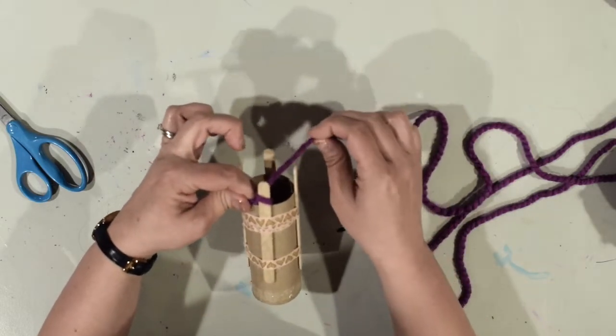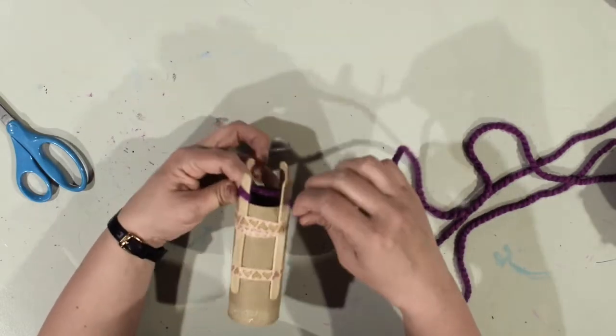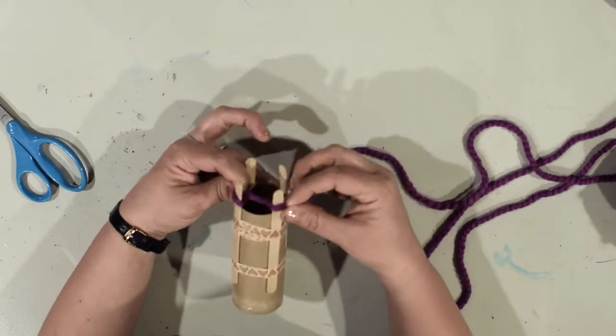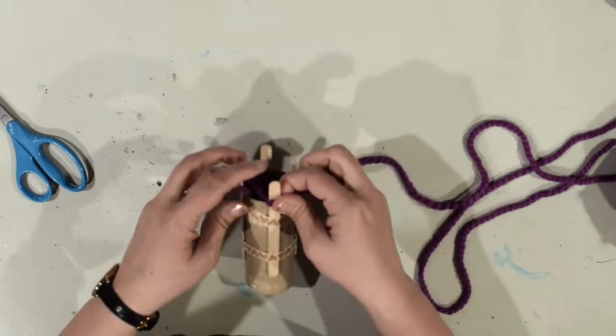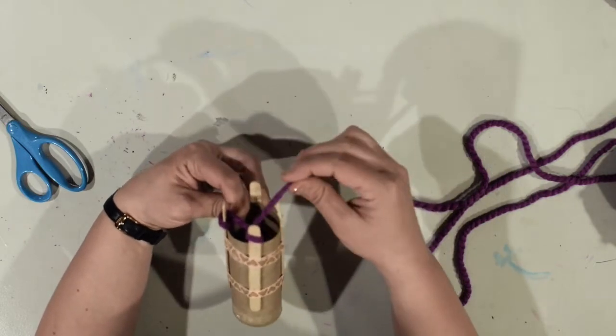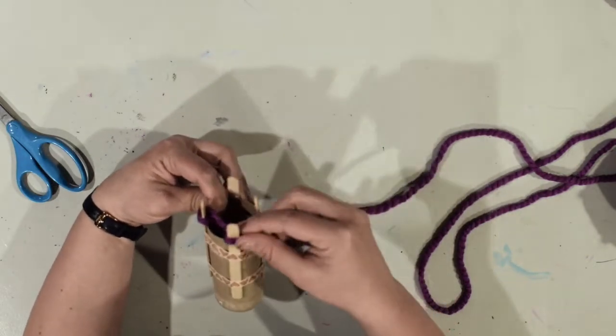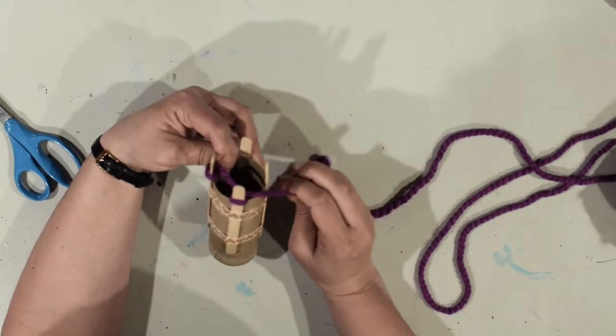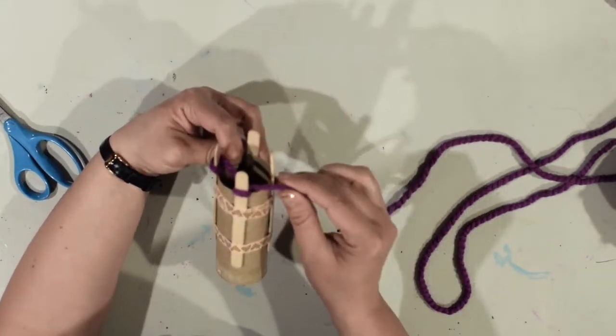Now my yarn is pulling over this way, so it's going to wrap around that next popsicle stick. Okay, now I need to still kind of hang on to these here. This first part is the trickiest part.